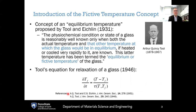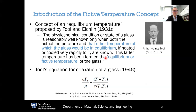Now I want to get into more detail on the concept of fictive temperature itself. This notion was first introduced by the scientist Arthur Quincy Toole back in 1931 — the first appearance of fictive temperature in the literature. In the paper by Toole and Eichlin, they write that the physico-chemical condition of a glass is reasonably well known only when both the actual temperature and that other temperature at which the glass would be in equilibrium if heated or cooled very rapidly to it are known. This latter temperature was termed the fictive temperature.